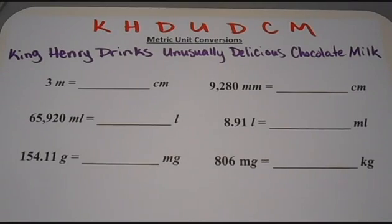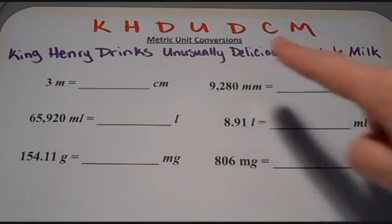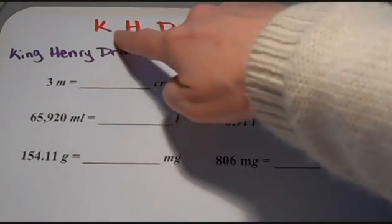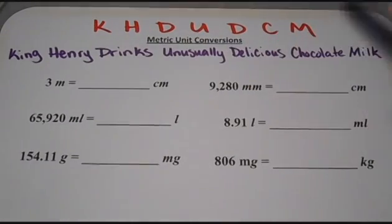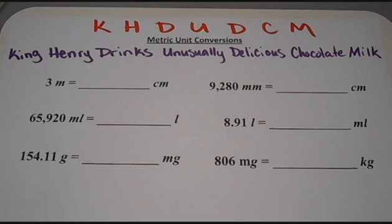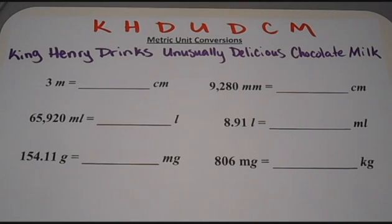The second step would be to write down these letters up at the top, just like I have done on my paper. And then I'm going to show you with a few examples how to use these letters in the order that they're in to make these conversions.